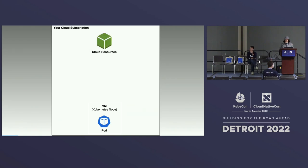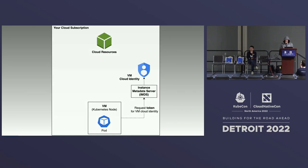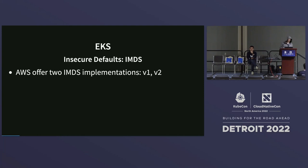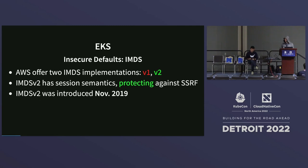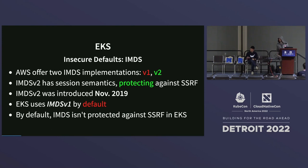This is a cloud-agnostic concept found in all major cloud providers. For our use case: a pod runs on a VM (a Kubernetes node), there's a VM cloud identity assigned to that specific VM, and there's the instance metadata service. The pod can request a token for this VM cloud identity, which is returned, and with it we can access cloud resources via the cloud API.